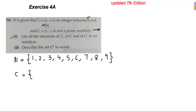C is the set where x is not a prime number. The elements of C are: 1, 4, 6, 8, and 9.